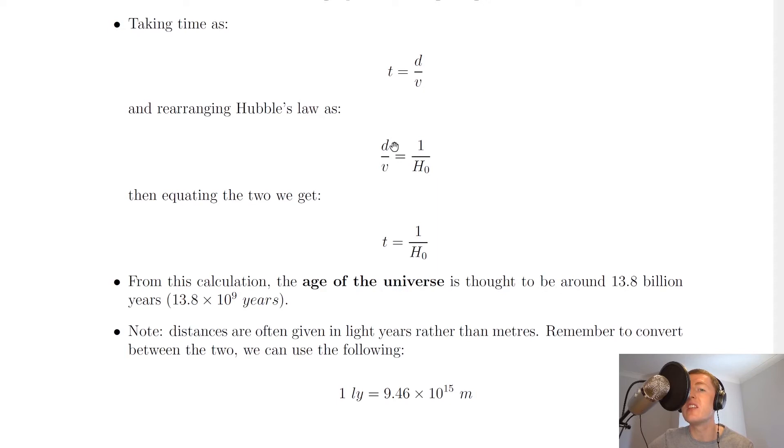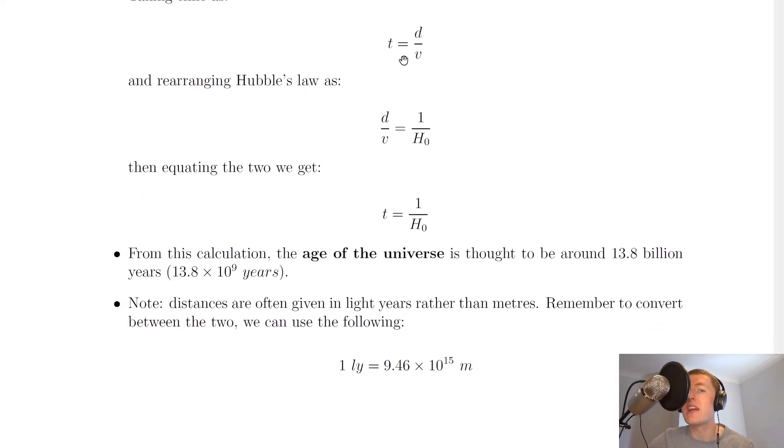We now have two equations for d over v. We have d over v equals t and we have d over v equals 1 over H₀. We can now equate the two because we have two d over v expressions. If we do that, we get t is equal to 1 over H₀.